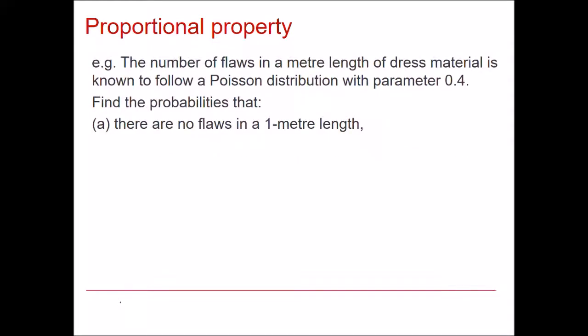Take this for example. Here we have a number of faults in one metre of cloth and we know that it's Poisson distributed with a mean of 0.4. So I could define that to be x and 0.4.